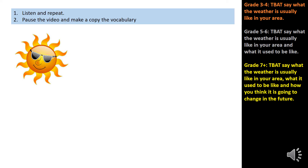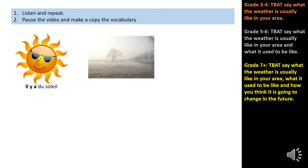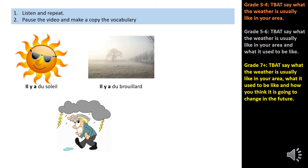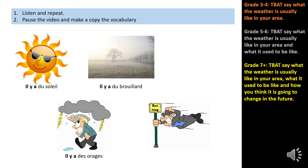So it's sunny — il y a du soleil. It's foggy — il y a du brouillard. It's stormy — il y a des orages. It's windy — il y a du vent.